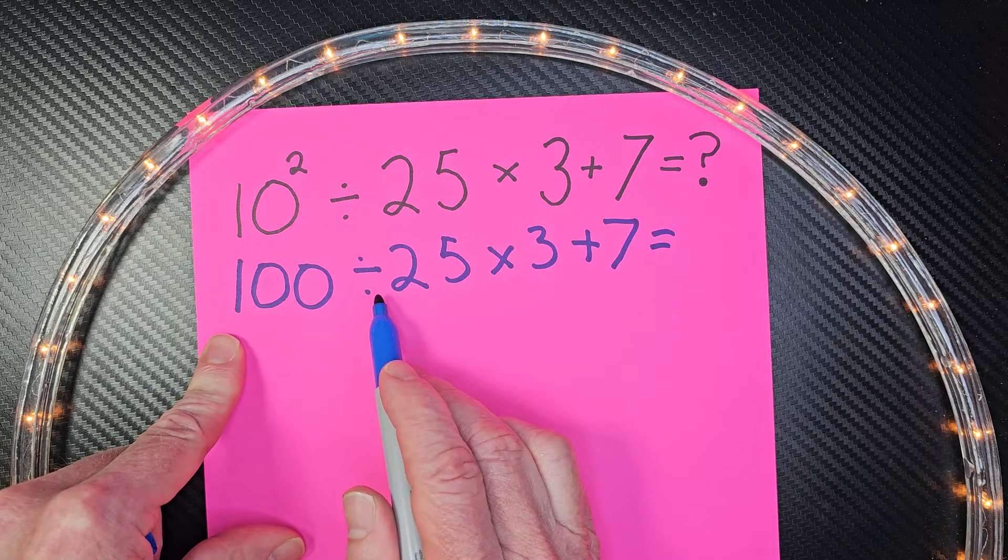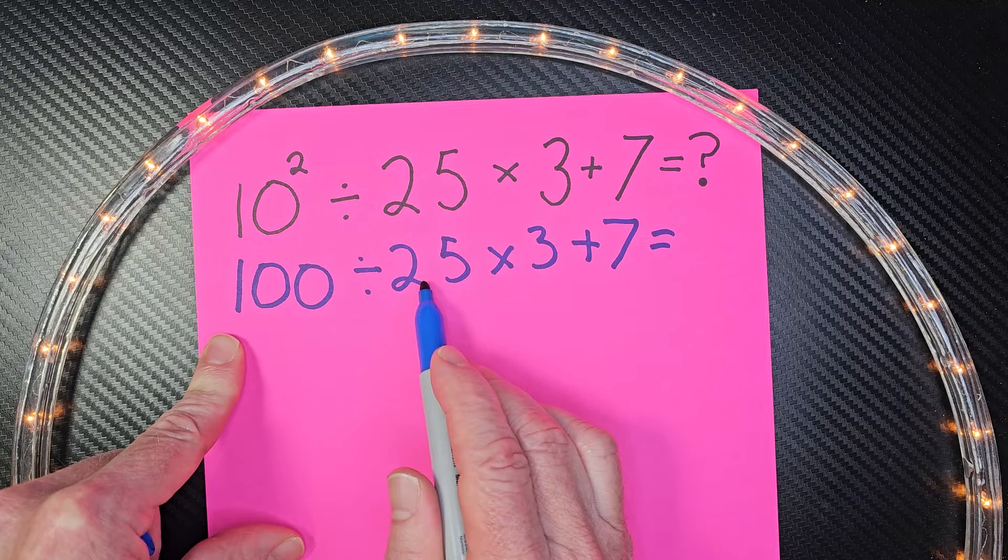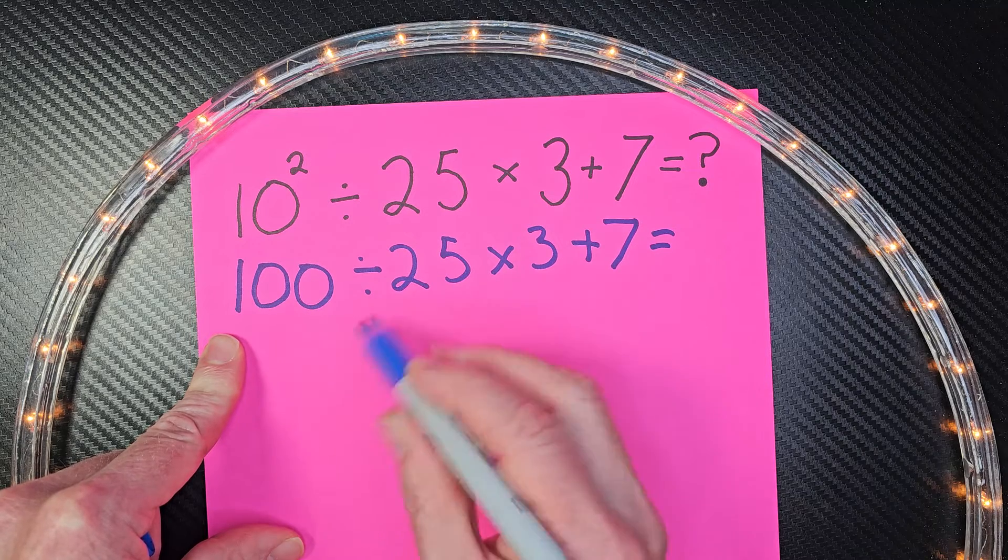Our next step would be division and multiplication from left to right. So we have 100 divided by 25, which is 4.